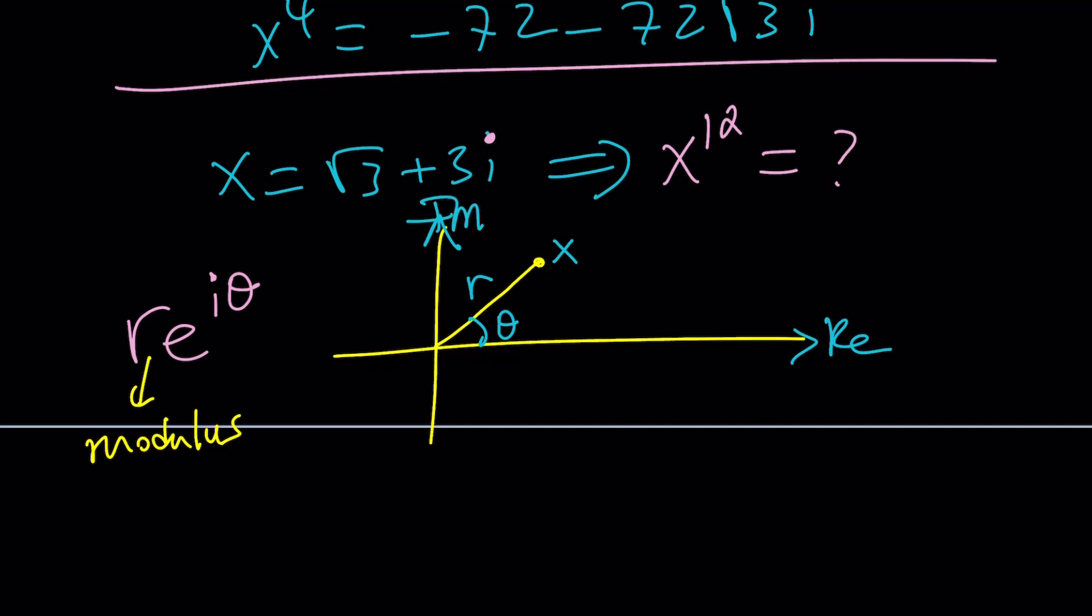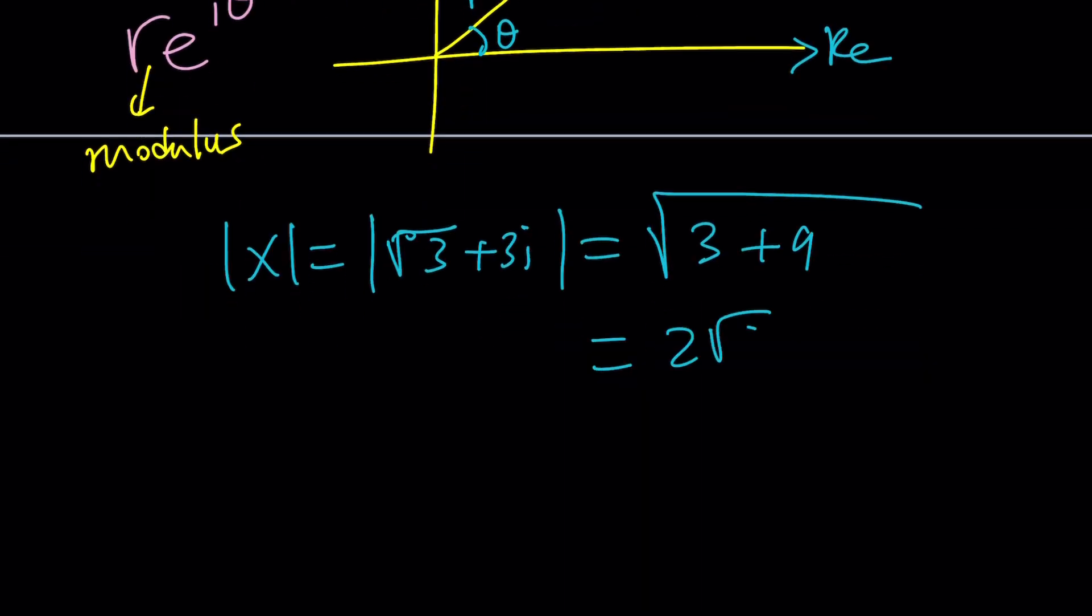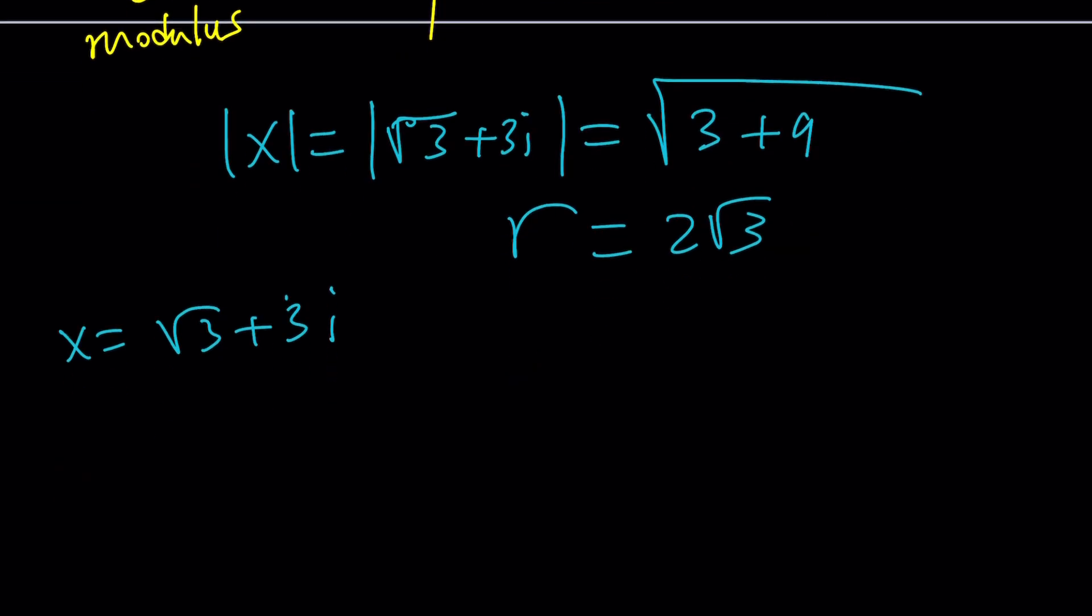How do you find r and theta? To find r, we're going to use the absolute value of this number. Absolute value of x is the absolute value of square root of 3 plus 3i. So we're going to take square root of square root of 3 squared, which is 3 plus 9. That's going to be 2 root 3, so that's r. And theta can be found by looking at tangent theta. Tangent theta is 3 over root 3, which is actually root 3.